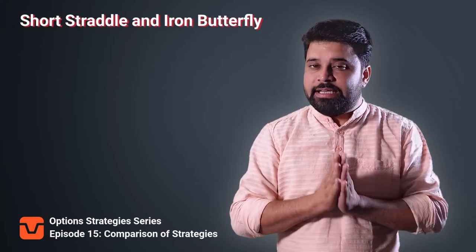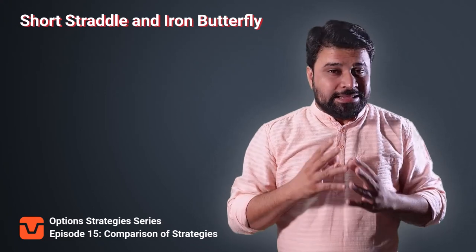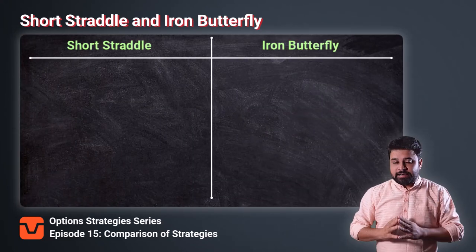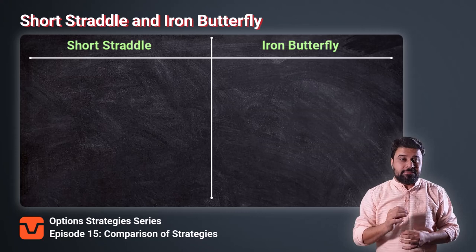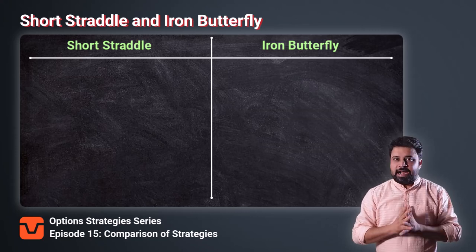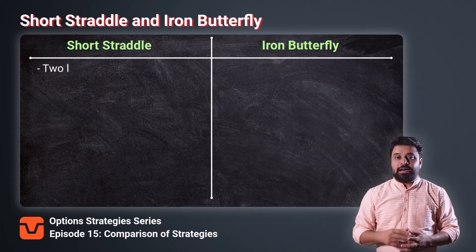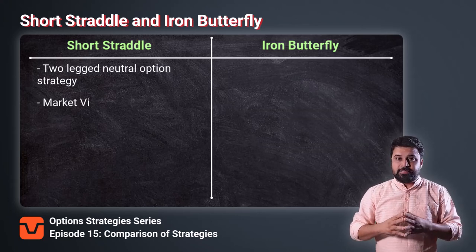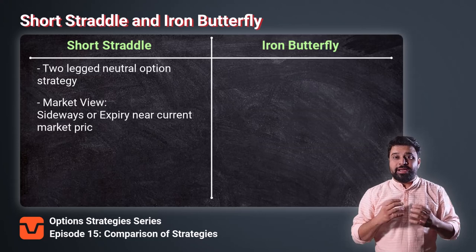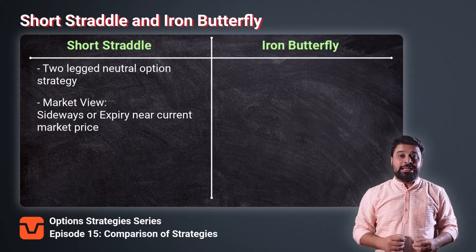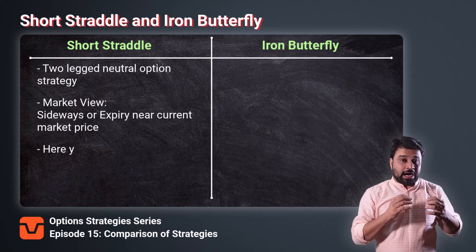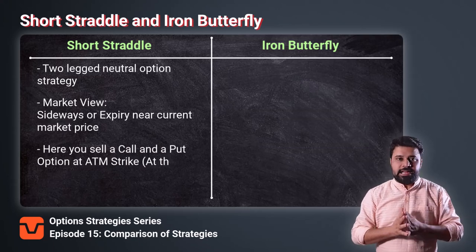First, let us compare the Short Straddle strategy and the Iron Butterfly strategy. These two strategies are very similar to each other. The Iron Butterfly strategy is the safer version of the Short Straddle strategy. Short Straddle is a two-legged neutral strategy. A trader generally deploys Short Straddle strategy when he expects the market to expire around the current market price. In this strategy, the trader sells a call and a put option of the ATM strike.